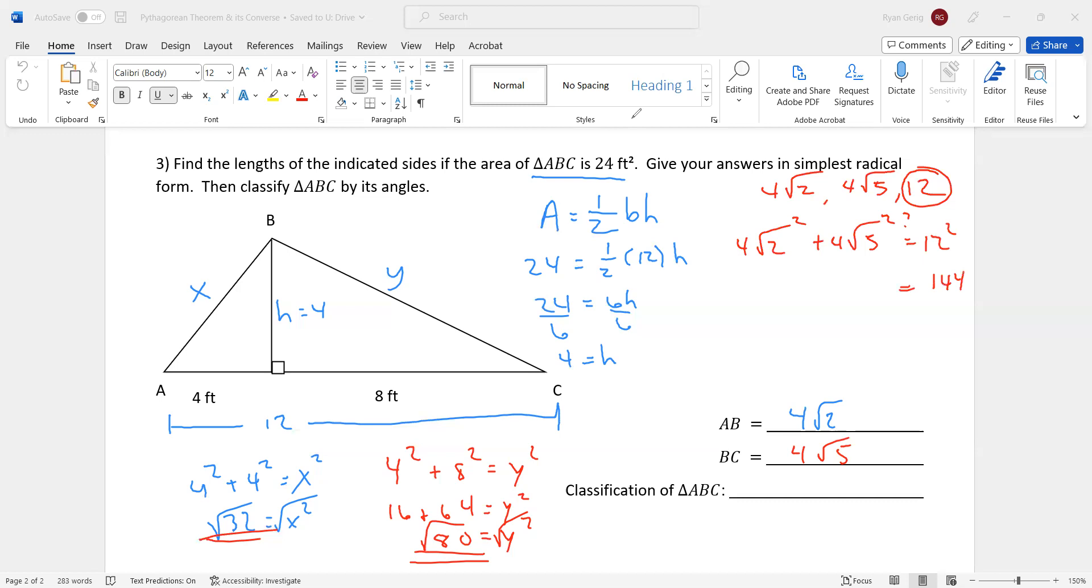Well, 4 radical 2 squared is 16 radical 4, which is 16 times 2, which is 32. 4 radical 5 squared is 80. Right? 16 times square root of 25, or 16 times 5, which is 80. 32 plus 80 is 112. So C squared is bigger. If C squared is bigger, it is an obtuse triangle.